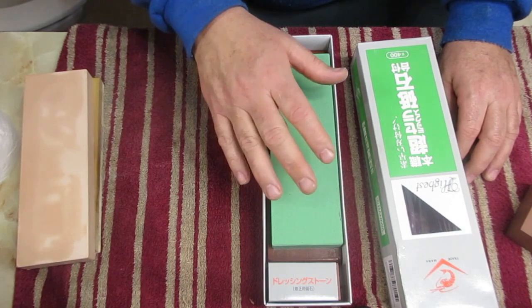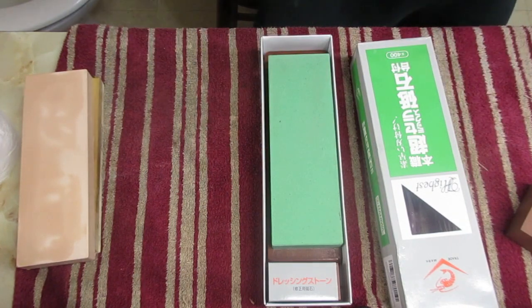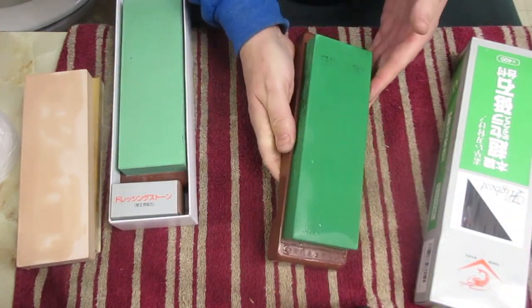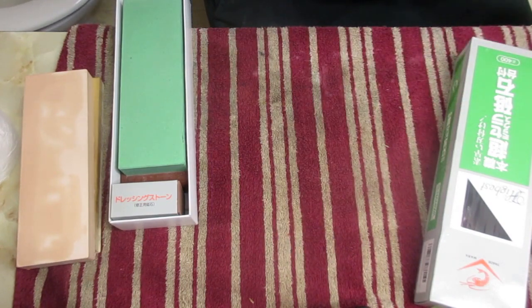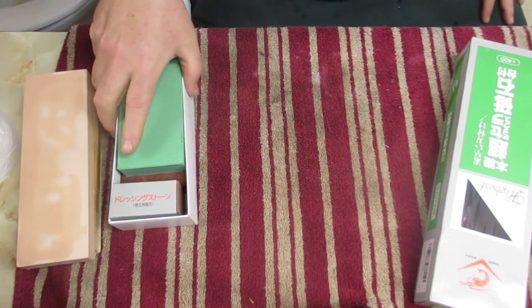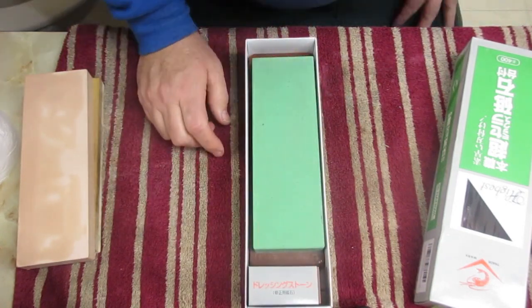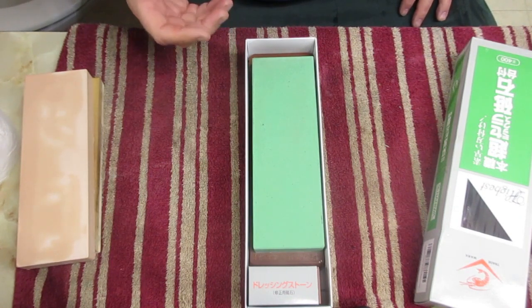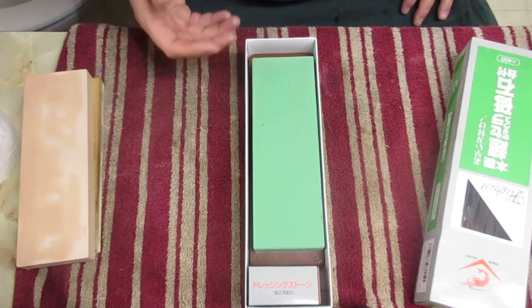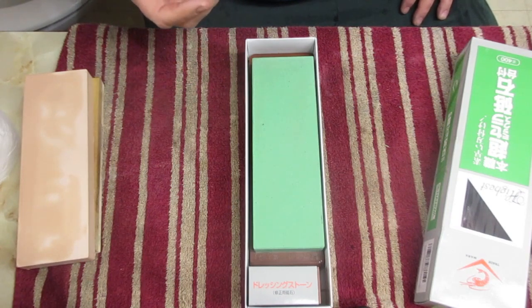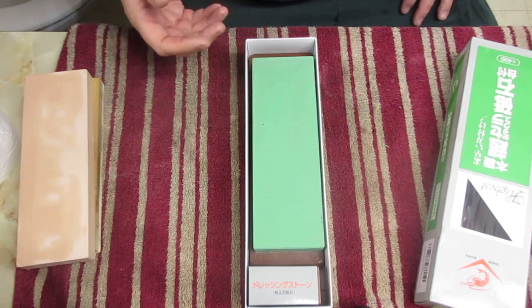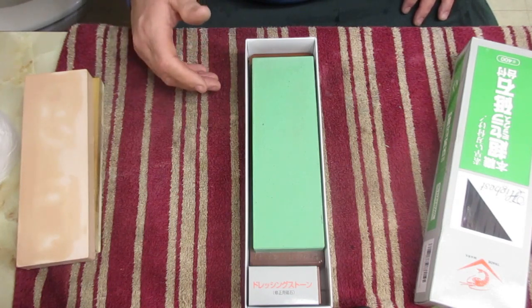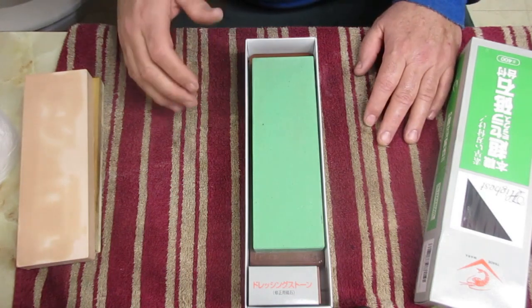You have the 400 and then the 1K. Both of these stones are fantastic stones, by the way. The 400 is wonderful. I use it for gold dollars, heavily ground razors, or any razor that has warps, wobbles, that needs a bevel cut into it. If I need to do any heavy lifting.